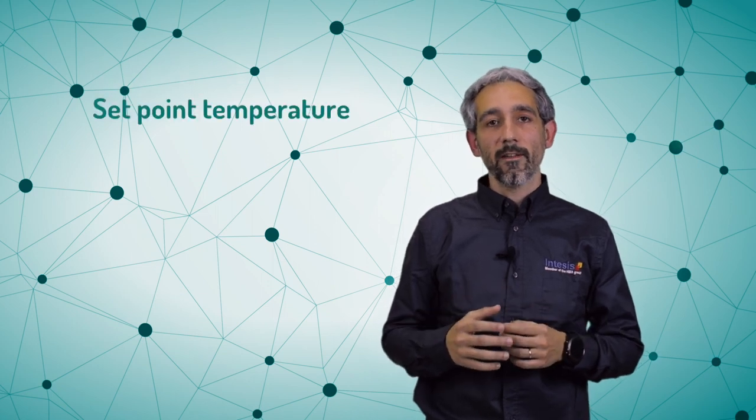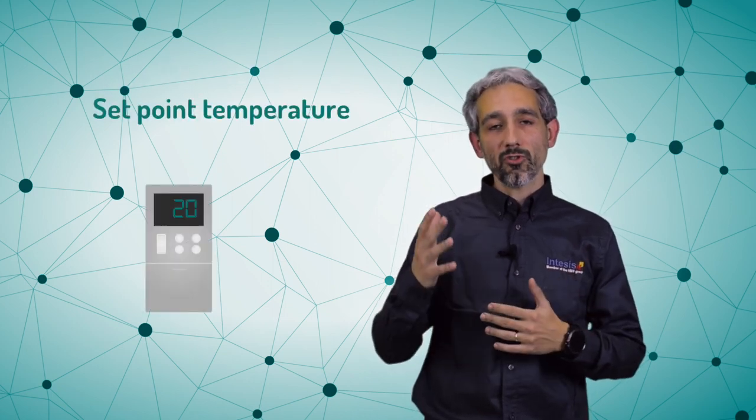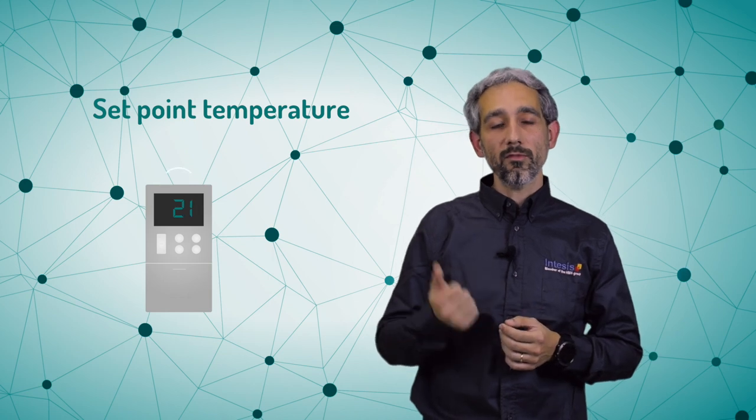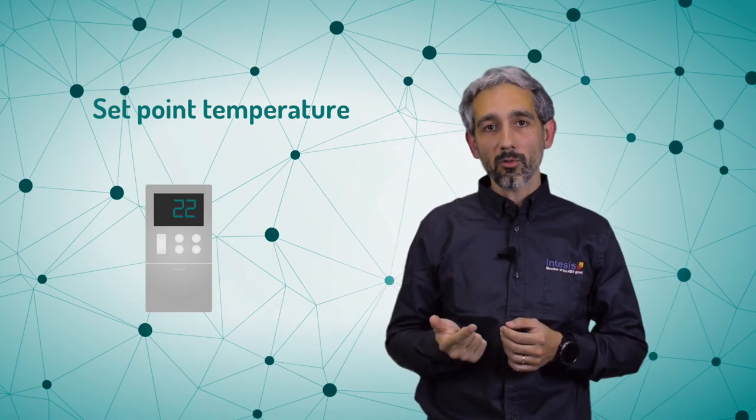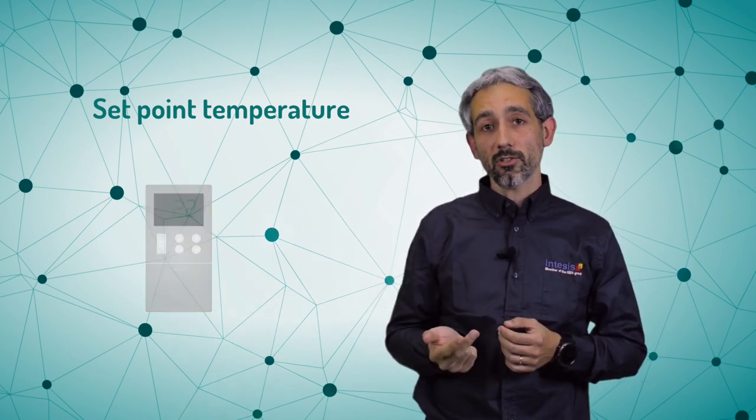Basically, AC units need two basic parameters in order to control their working mode. The first one is the setpoint temperature. This is the temperature which is introduced by the user, either using an infrared remote controller, a wired remote controller, or a BMS decentralized controller.